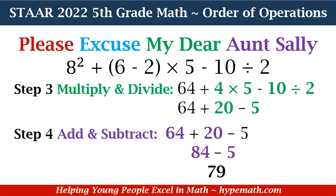Next, we have multiplication and division from left to right. So our expression is 64, and we have 4 times 5, which equals 20, minus 10 divided by 2, which is 5. Our expression is now 64 plus 20 minus 5. Next, we have adding and subtracting: 64 plus 20 equals 84, and 84 minus 5 equals 79.